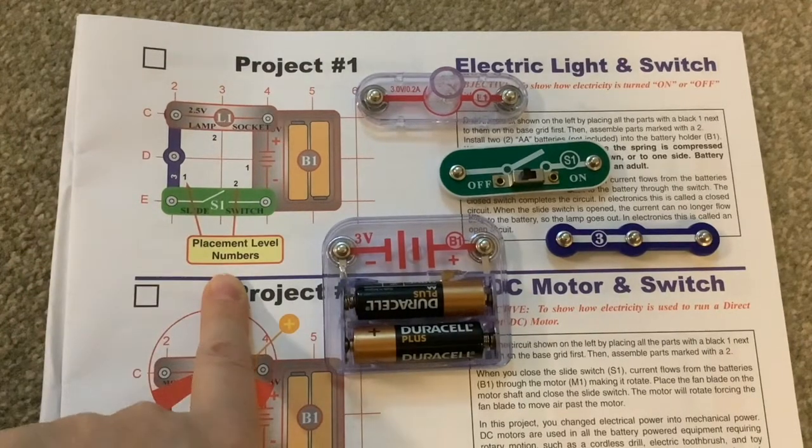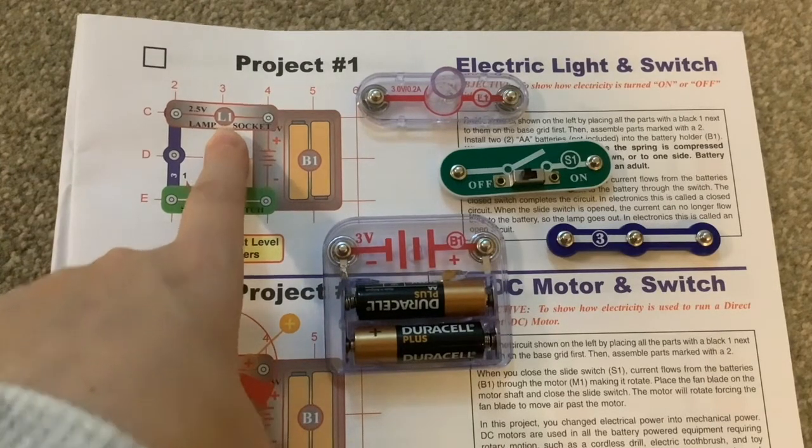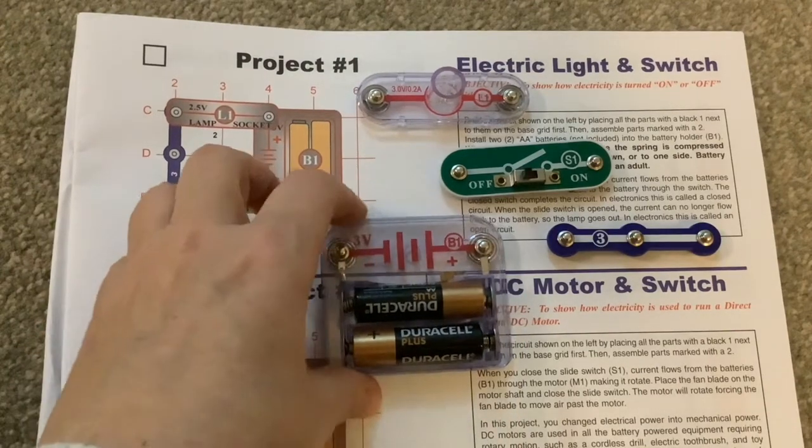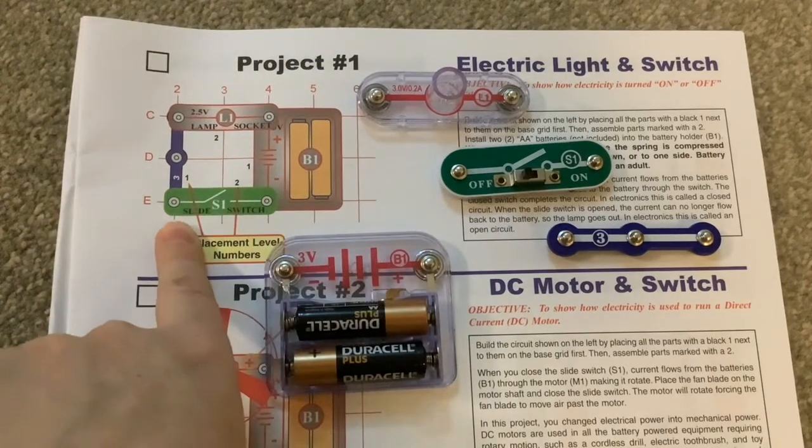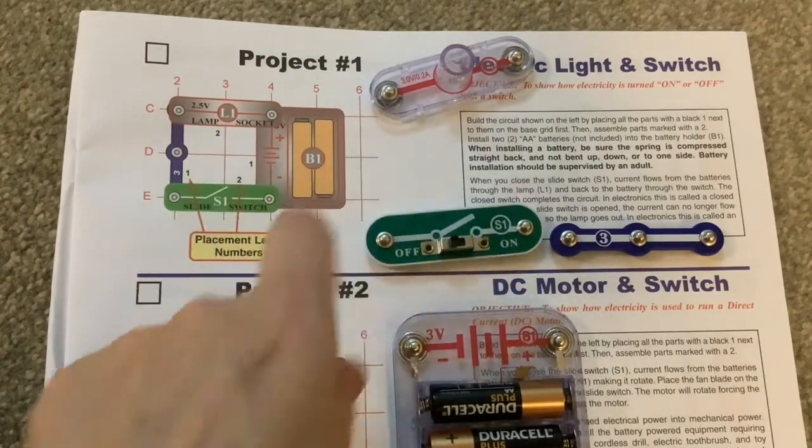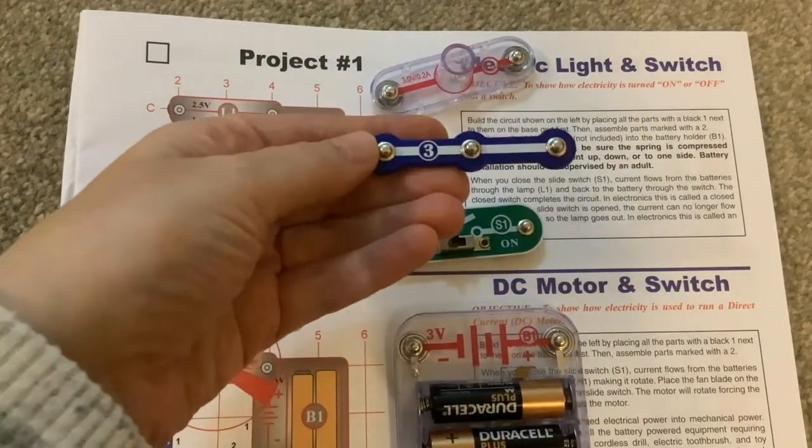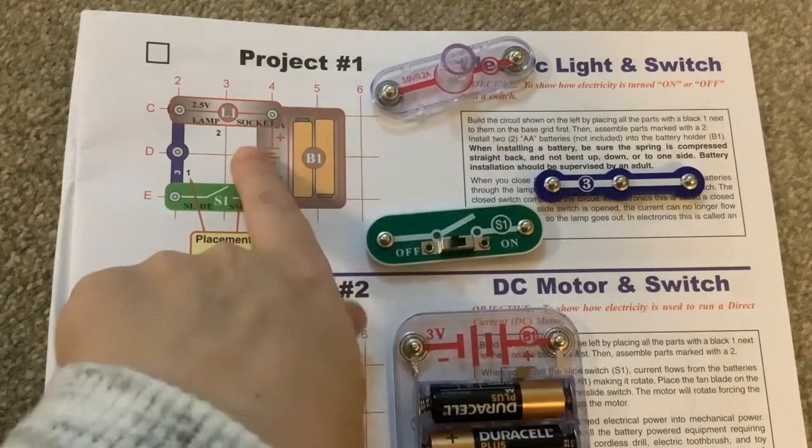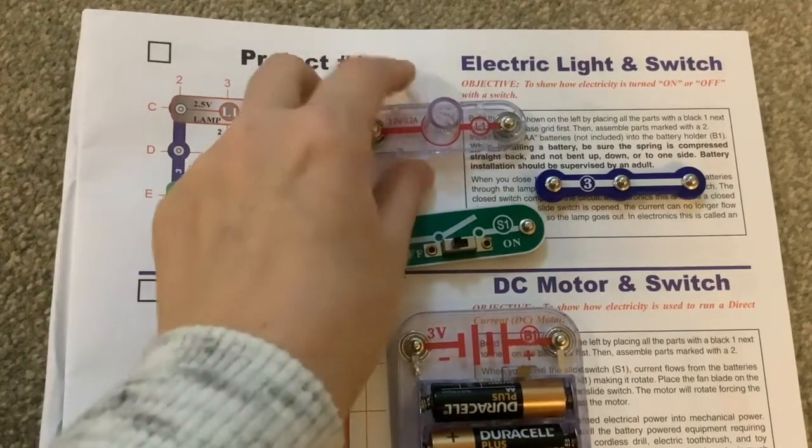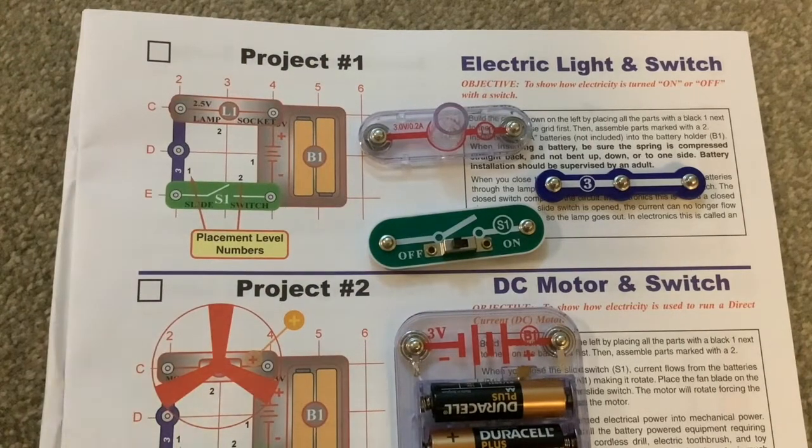They make things as easy as possible. They mark up each component with a letter and a number. So the battery box is marked B1, the switch is marked S1, we need a three-snap circuit bit marked 3, and we need that lamp component marked L1. It makes it really easy.